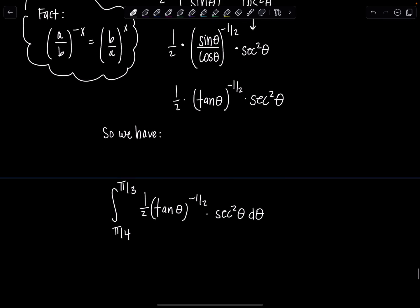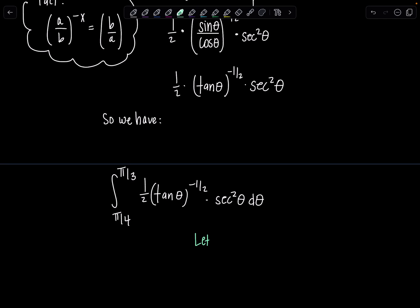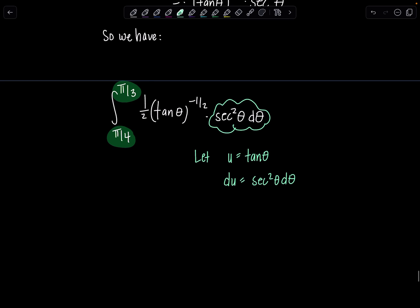The next step is we're going to let u equal tangent theta and then du is, oh so fabulous, secant squared theta d theta right here. We also need to change our limits of integration. These limits belong to theta, but I need to change them so that they're in terms of u. u of pi over four is tangent of pi over four. Do you know what that is? One, very good. And then u of pi over three is tangent of pi over three, which is rad three.